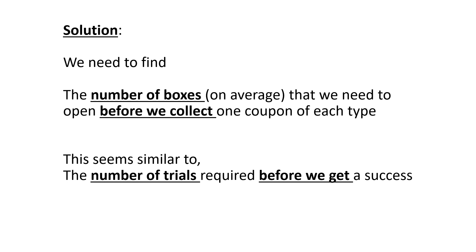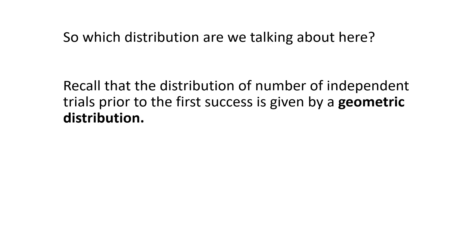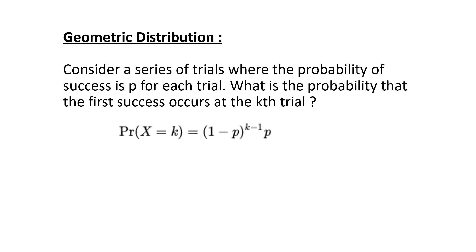This seems similar to the number of trials required before we get a success. So which distribution are we talking about here? Recall that the distribution of number of independent trials prior to a first success is given by the geometric distribution. To refresh your memory, consider a series of trials where the probability of success is p for each trial. What is the probability that the first success occurs at the kth trial? We have k minus 1 failures first with probability 1 minus p, and then the kth trial is a success with probability p. So this gives us the PMF of a geometric distribution.